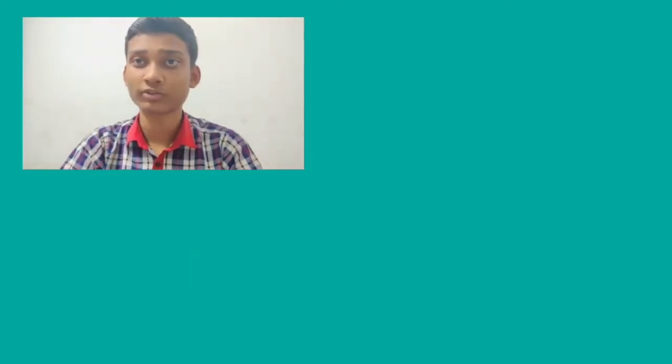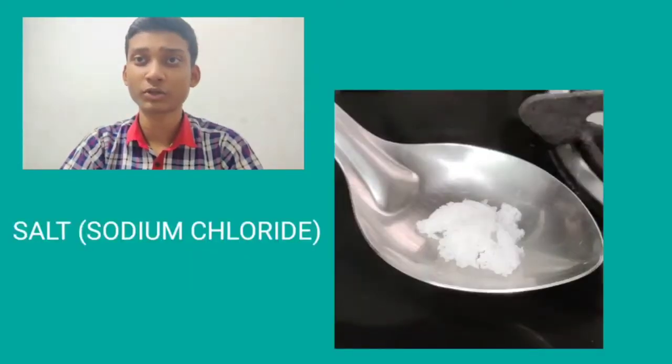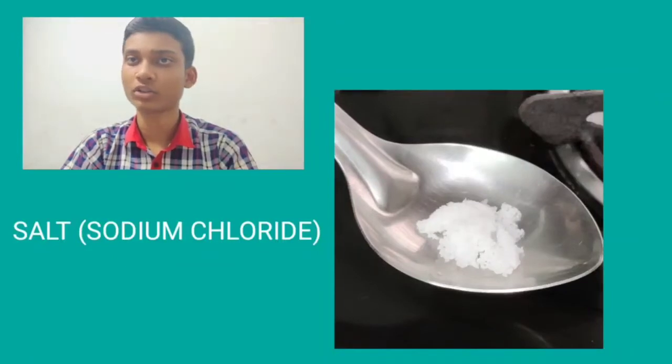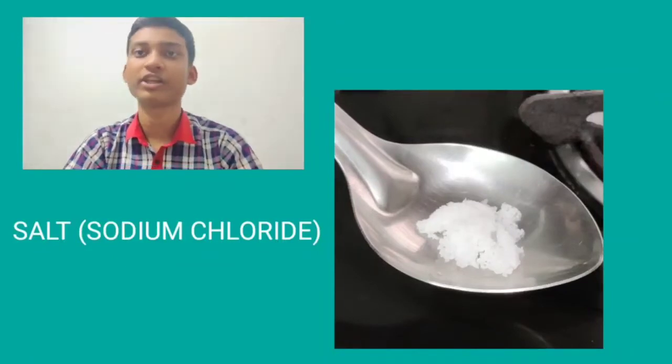Properties of Ionic Compounds. First, let's take an ionic compound like sodium chloride or the common table salt and test its properties.